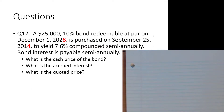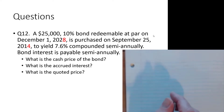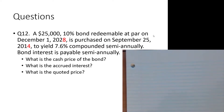The bond is redeemable at par on December the 1st, 2028. It's purchased on September 25th, 2014, with a yield of 7.6% compounded semi-annually, and the bond interest is also payable semi-annually. We have three typical questions: what is the cash price, what is the accrued interest, and what is the quoted price?